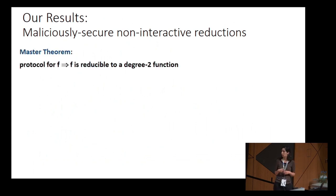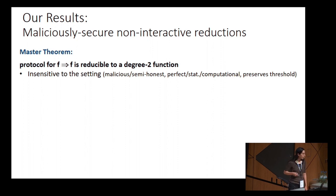We solve this by proving a main theorem that we see as our main result. We call this the master theorem. If we have a protocol that computes f, we can use it to define a non-interactive reduction from f to a function of degree 2. What is nice about this master theorem is that it's not sensitive to the security setting. It preserves the security guarantee that we had from the protocol we started from. The price we have to pay is that the complexity grows exponentially with the depth of the protocol we started from.